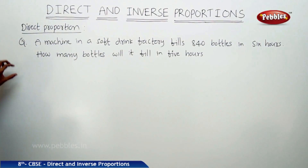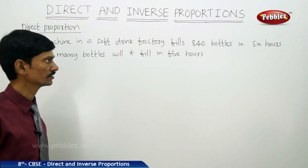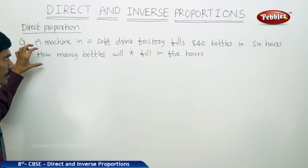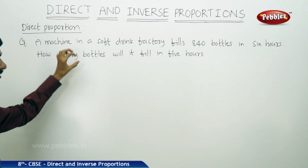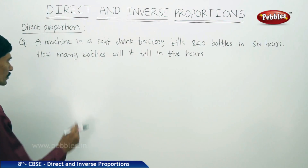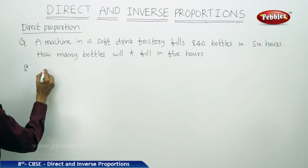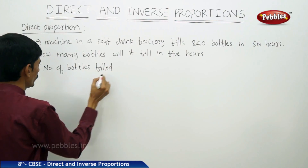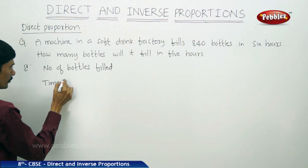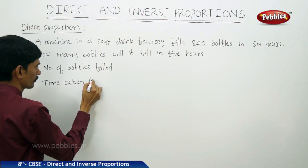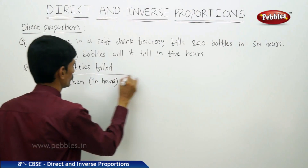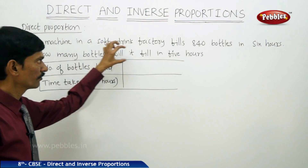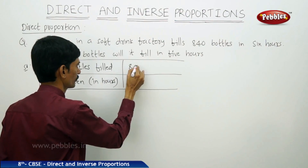Now let us see the next question. A machine in a soft drink factory fills 840 bottles in 6 hours. How many bottles will it fill in 5 hours? We can observe that there are two quantities: the first is number of bottles filled, and the second is time taken. We will take these two quantities in a table. It fills 840 bottles in 6 hours.